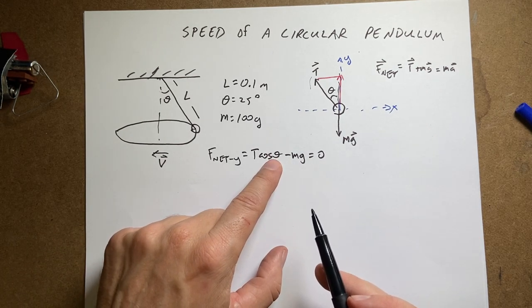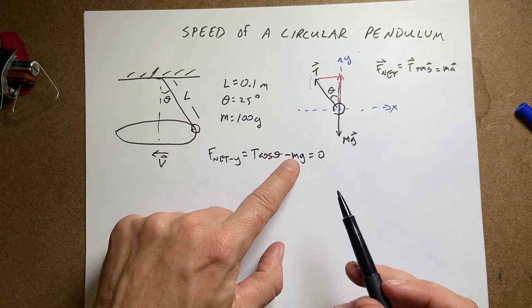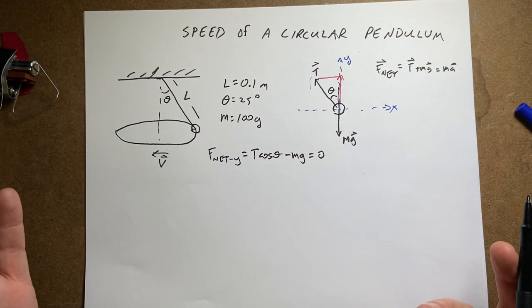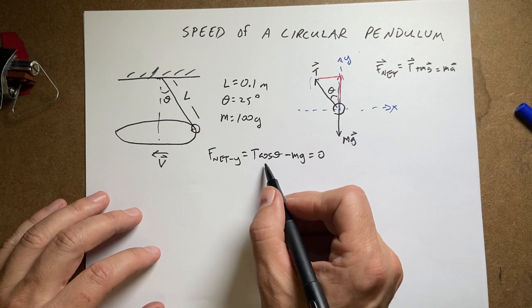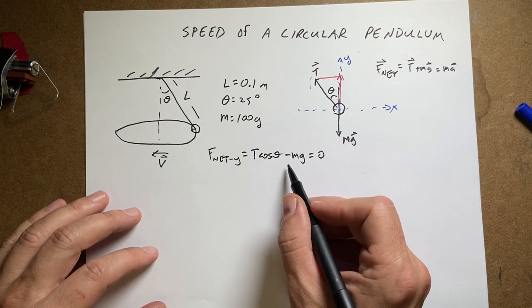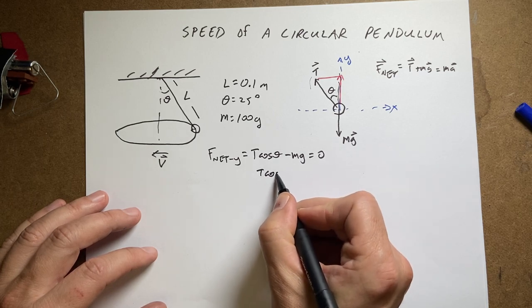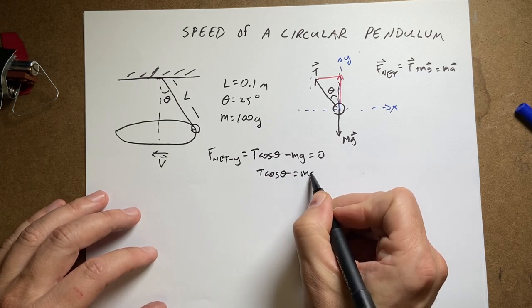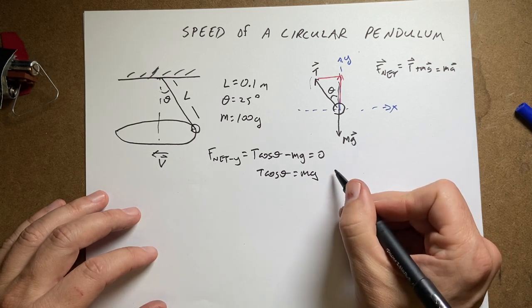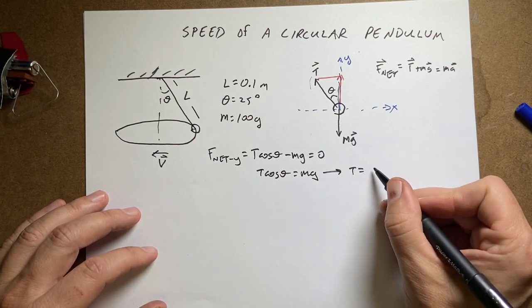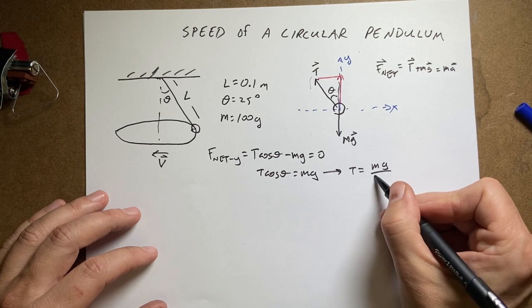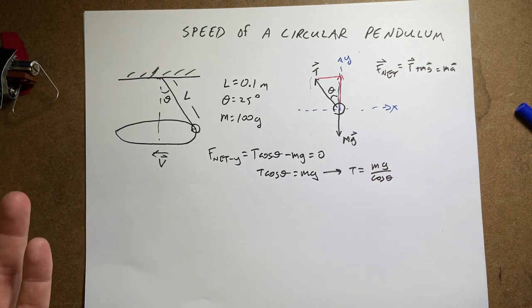So in this case, I actually know theta is 25 degrees. I picked that. I know M. I know G. So I'm pretty good right here. Let's go ahead and solve this for tension. That's the only thing I don't know. So if I add mg to both sides, I get T cosine theta equals mg and then I can solve for T. T equals mg divided by cosine theta. So I know everything there.